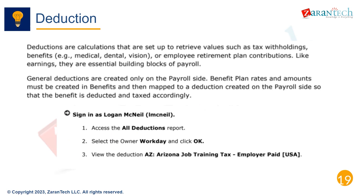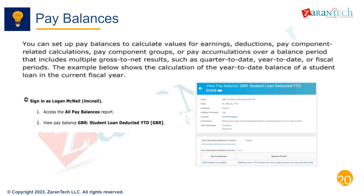Deductions are the reverse — they calculate amounts that should be subtracted from gross pay. Common deductions are taxes, health premiums, 401k contributions, union fees, and garnishments. Deductions support cascading thresholds, like calculating federal, state, and local taxes, and can also return negative values to provide credits that increase net pay.